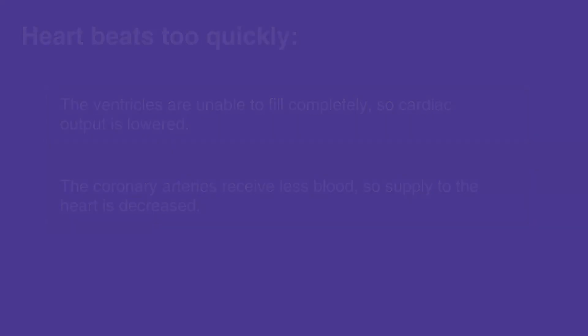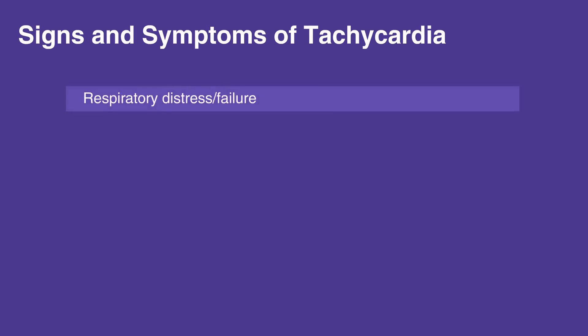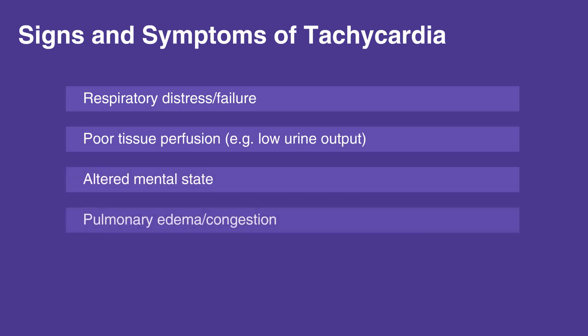Signs and symptoms of tachycardia include respiratory distress or failure, poor tissue perfusion — for example, low urine output — altered mental state, pulmonary edema or congestion, and weak rapid pulse.